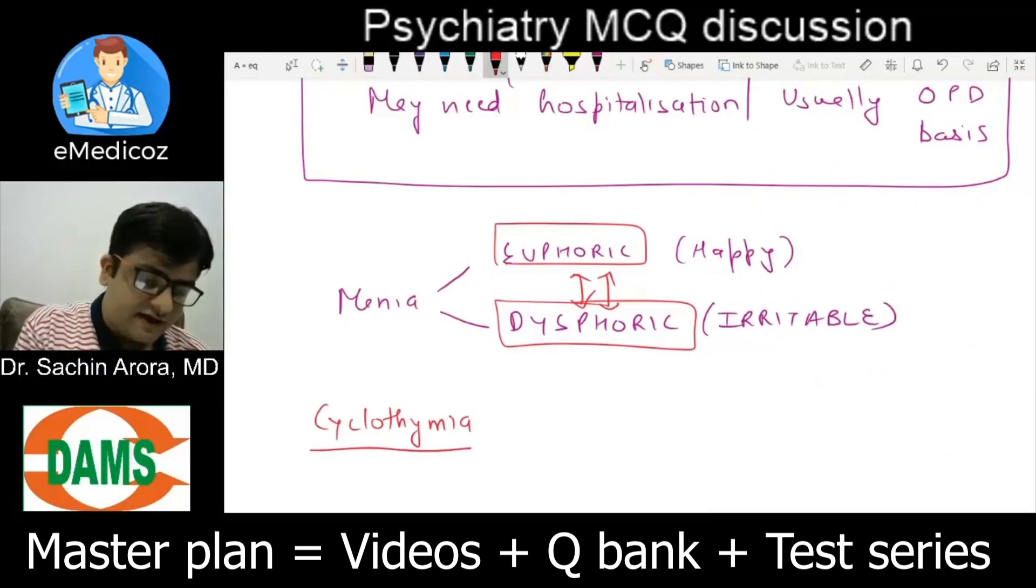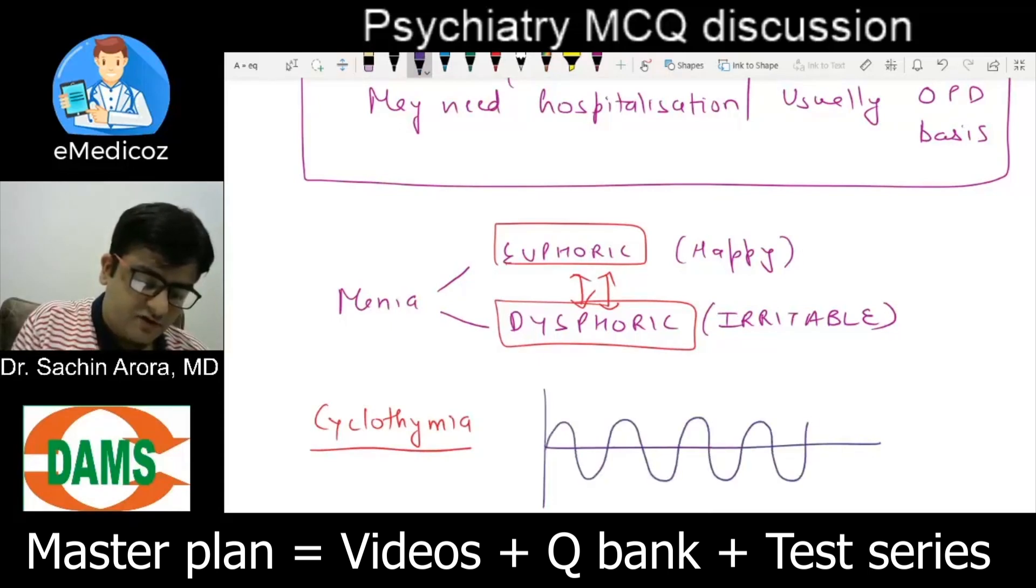Cyclothymia is hypomania and subsyndromal depression continuing for a period of two years. It neither has full-blown mania nor full-blown depression.